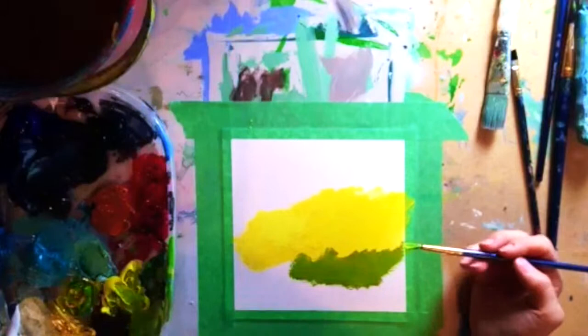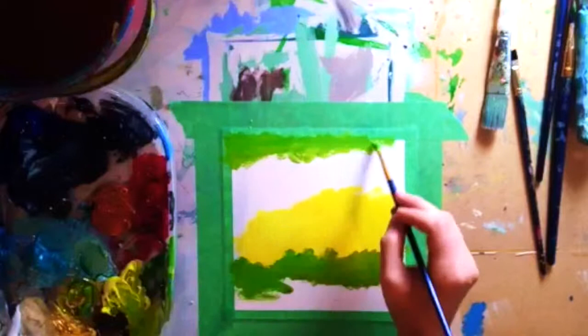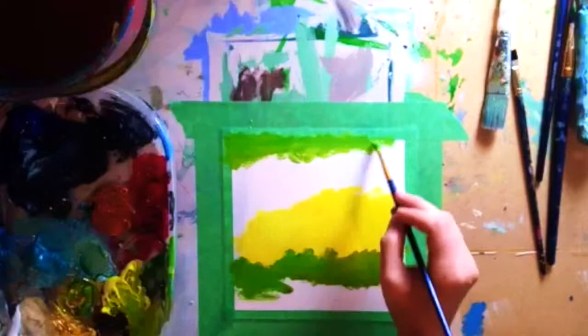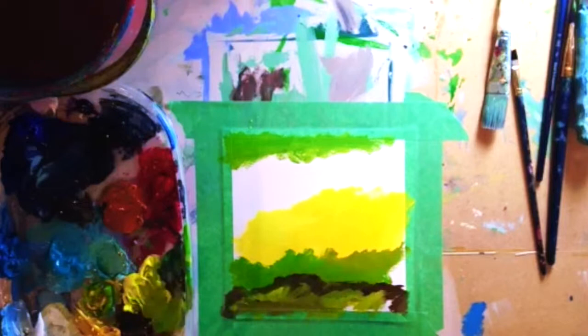Putting down color like this, for anyone who doesn't paint, this is blocking color. So it's just putting color down in blocks. And sometimes I will block in a painting and think, well that's it. That looks good. And I'll just leave it at the blocking stage.